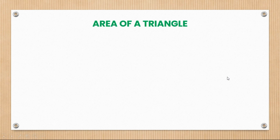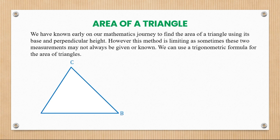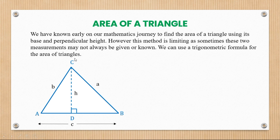We're going to learn about the area of a triangle. We have known earlier on our mathematics journey how to find the area of a triangle using its base and perpendicular height. However, this method is limiting as sometimes these two measurements may not always be given or known. We can use a trigonometric formula for the area of triangles. Imagine a triangle where you know the base AB and the perpendicular height h or CD.